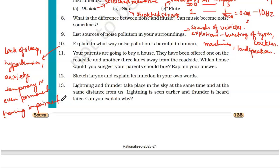Question number eleven: your parents are going to buy a house — one on the roadside and another three lanes away. Which would you suggest? Obviously, suggest the house away from the roadside. If you choose the roadside house, you will be continuously exposed to honking of vehicles. The house three lanes away will have a much lower level of noise pollution since you are staying far from the roadside.